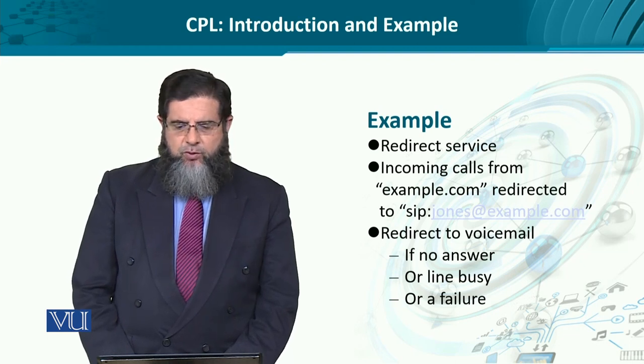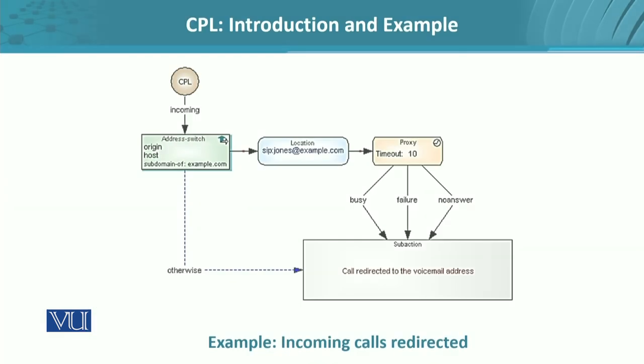If those options are not executed, then eventually voicemail is activated. At the start, a certain call is made. The address of the origin and the host are determined. If the caller is from example.com, the call is forwarded to a user Jones at the domain example.com.